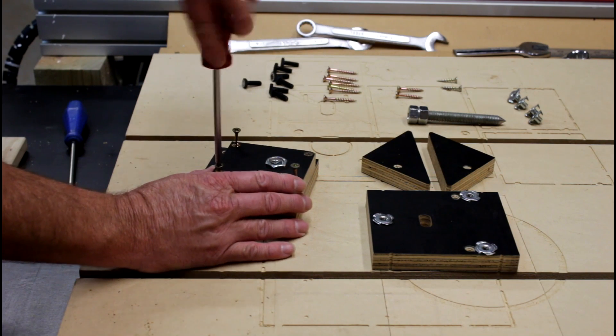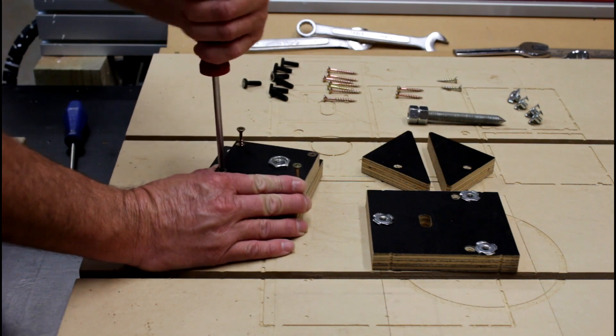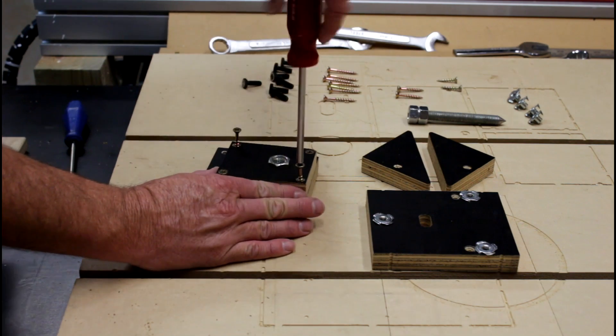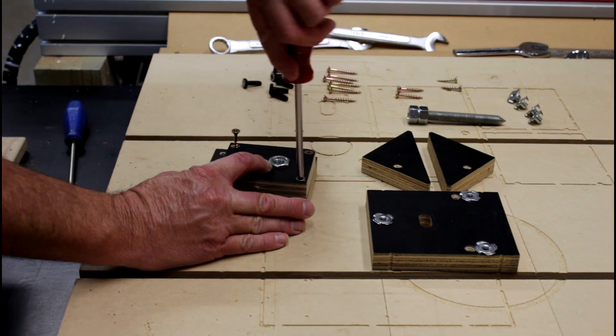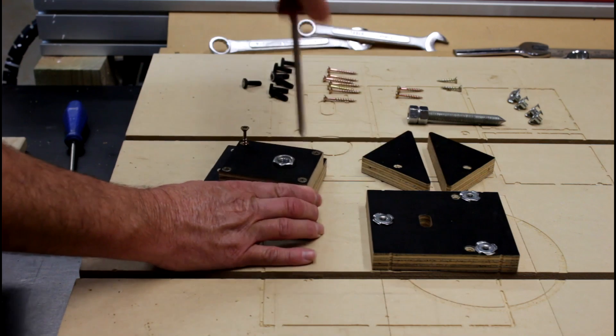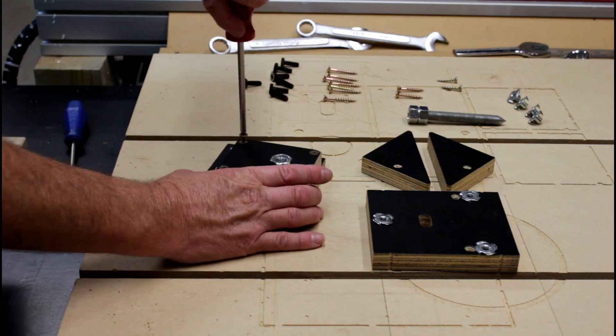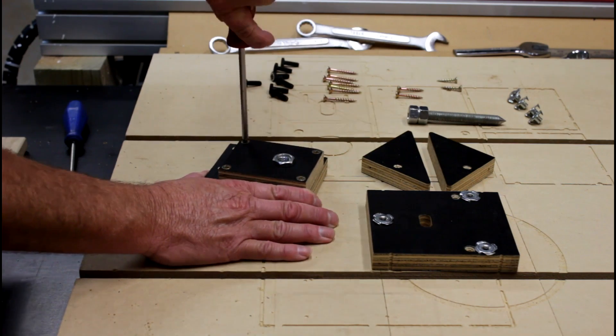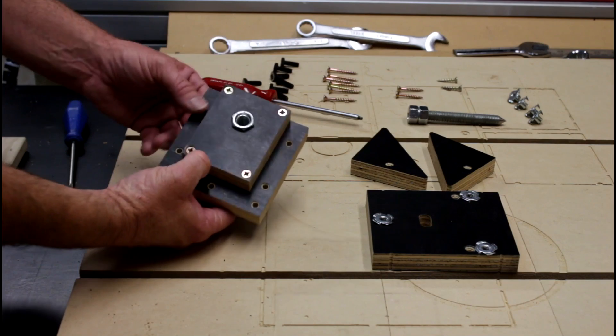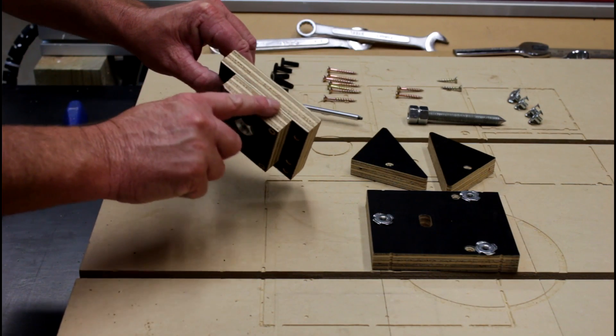What you will need to do is you will need to measure whatever coupling nut that you can buy, be it 12 millimeter or half inch, and adjust the size of this hole to suit the nut. You want the hole to be nice and tight like this one here is. You want to make sure that this piece here and this piece here are flush along the top here.